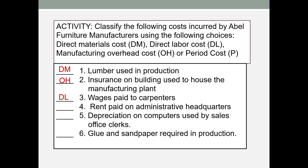Rent paid on administrative headquarters: this is a facilities cost on selling and administrative facilities, so it's a period cost. Depreciation on computers used by sales office clerks: that would be a selling cost, classified as period. Glue and sandpaper required in production: this is a product cost because it is required in production. However, we would not trace how much sandpaper or glue is needed for each desk, so while it is a product cost, it is not direct material or direct labor — it would be classified as manufacturing overhead.